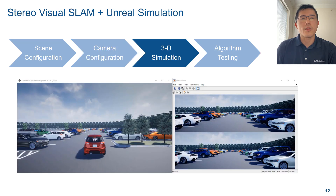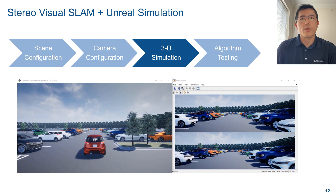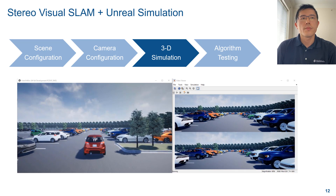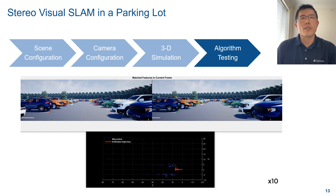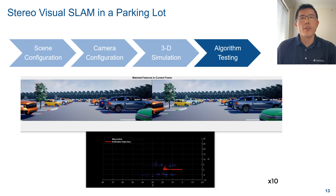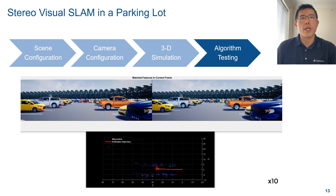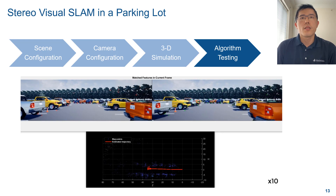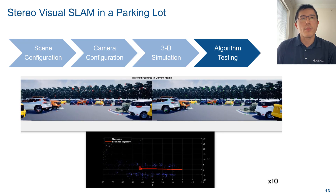Once you set up the scene and the stereo camera, you can run the simulation to generate data. With the data, you can test the Stereo Visual SLAM pipeline. Here, the top figure shows the tracked features in the current stereo image. The lower figure displays the reconstructed parking lot and the estimated camera trajectory.